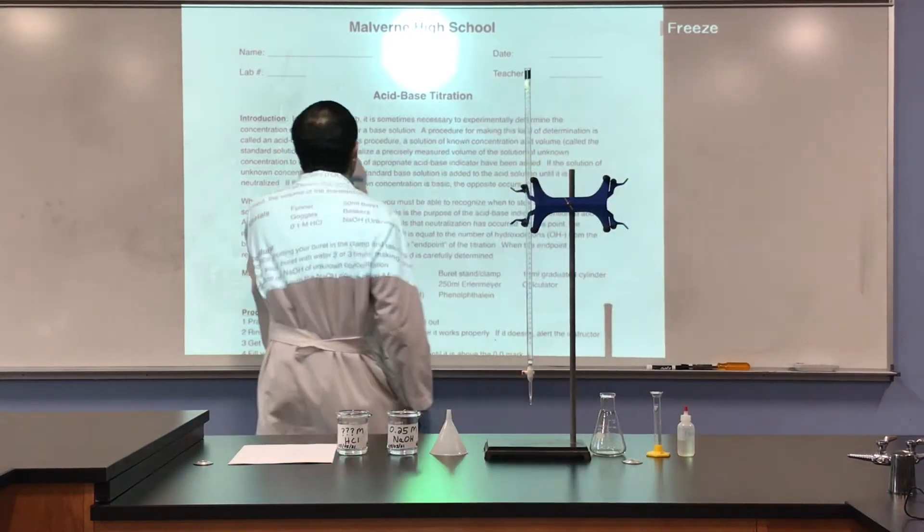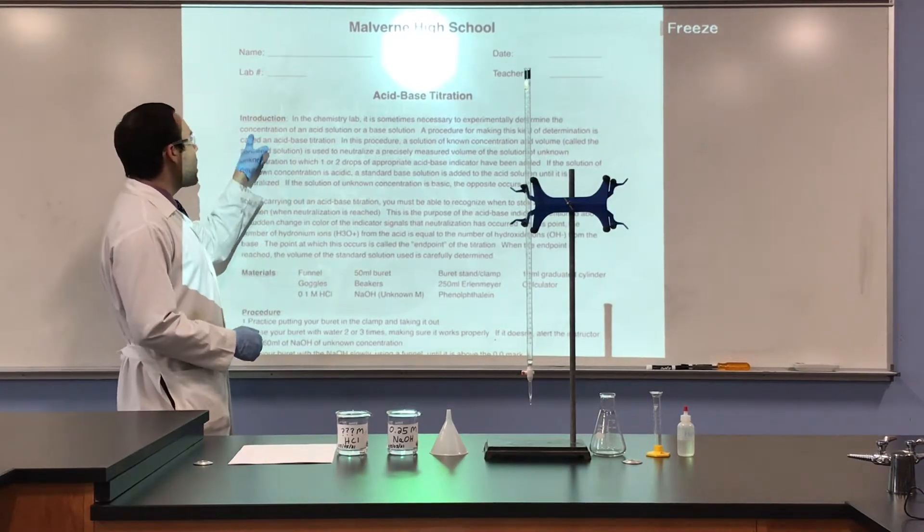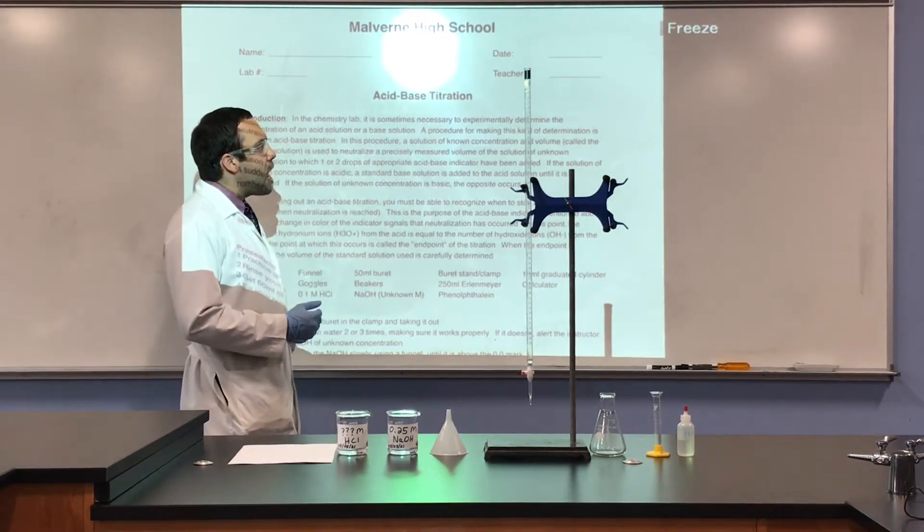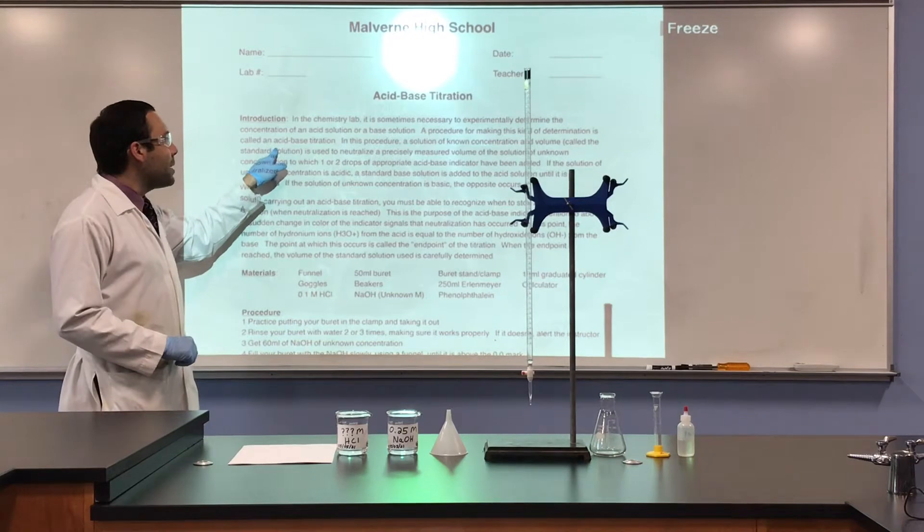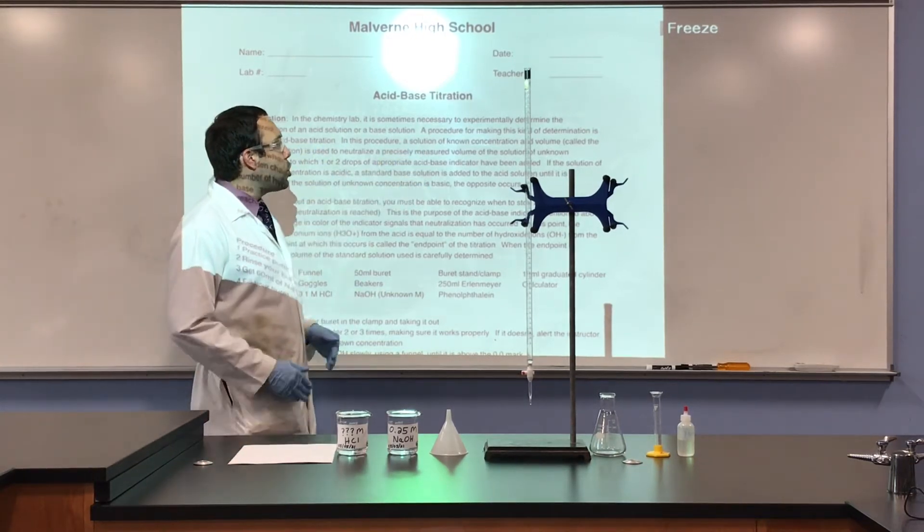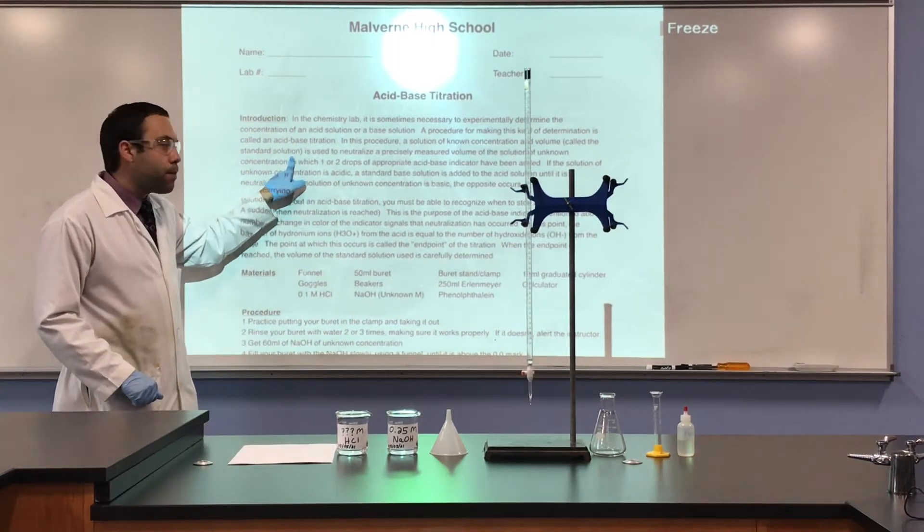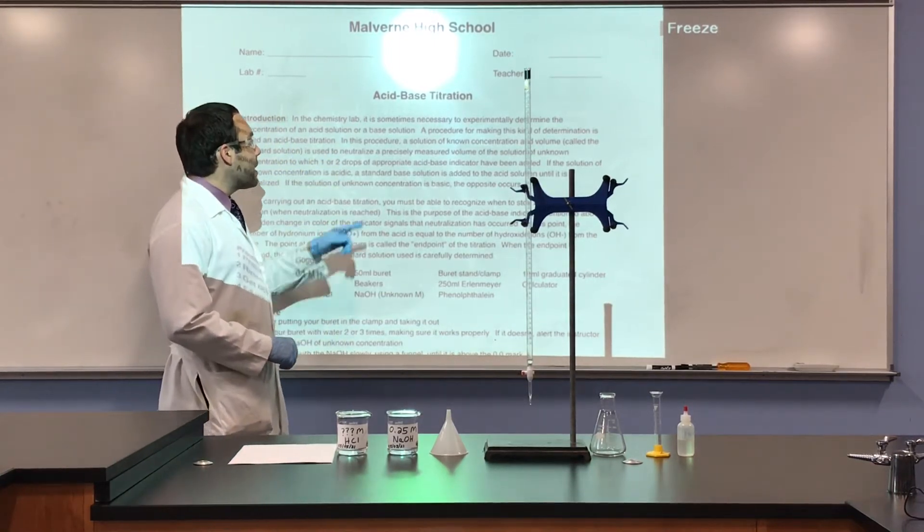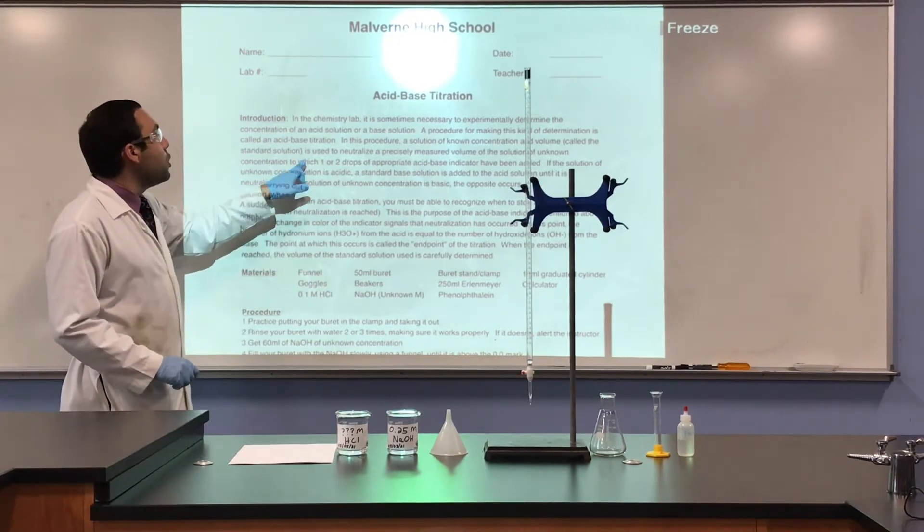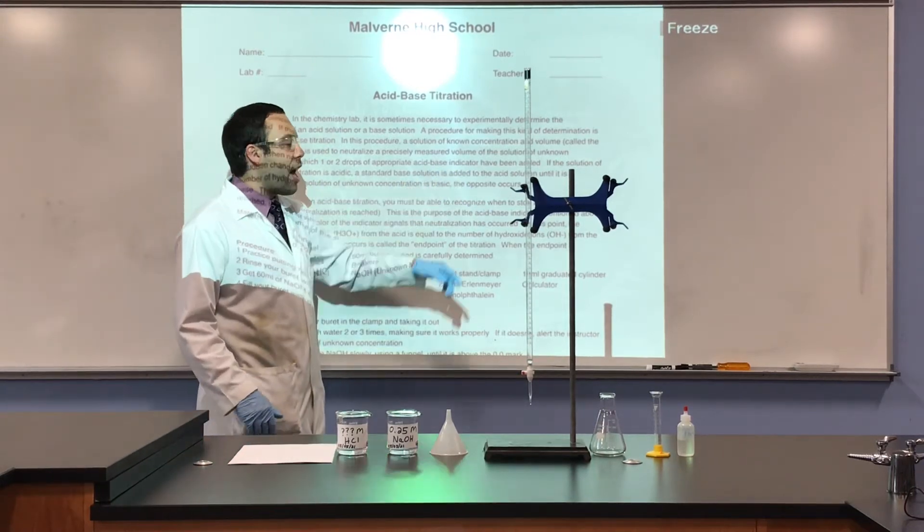Introduction. In the chemistry lab, it is sometimes necessary to experimentally determine the concentration of an acid solution or a base solution. A procedure for making this kind of determination is called an acid-base titration. In this procedure, a solution of known concentration and volume, called the standard solution, is used to neutralize a precisely measured volume of the solution of unknown concentration, to which one or two drops of appropriate acid-base indicator have been added.